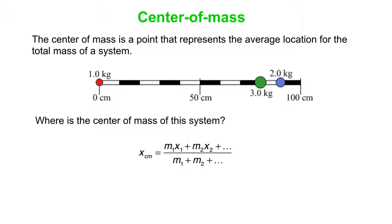We can use this equation here. The x-coordinate of the center of mass is the mass of piece one times its x-coordinate plus the mass of piece two times its x-coordinate plus etc., divided by the total mass of the system m1 plus m2 plus etc.